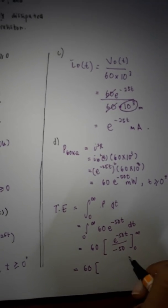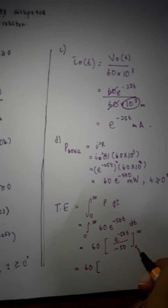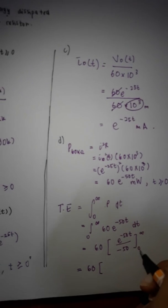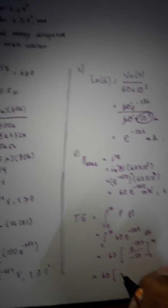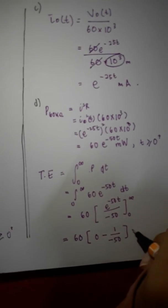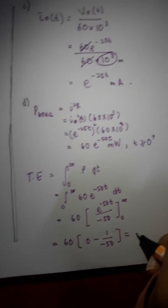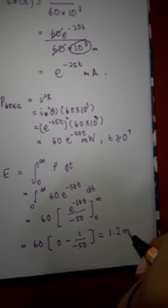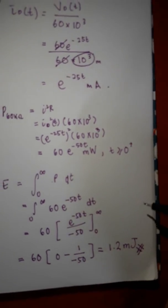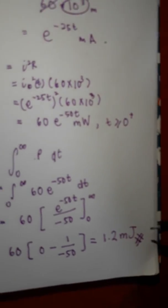So, we solve it. We get zero minus. So, the solution is zero minus one minus 50. So, the final answer is 1.2 millijoule. So, that's the energy. Total energy distributed in the 60 kilo ohm.